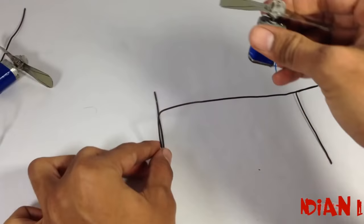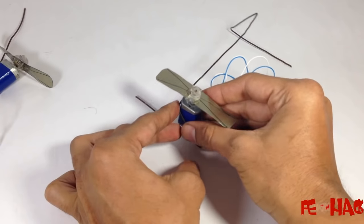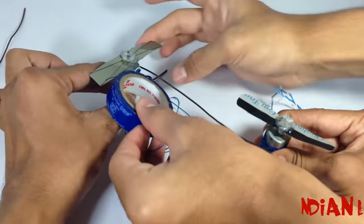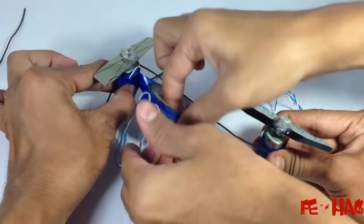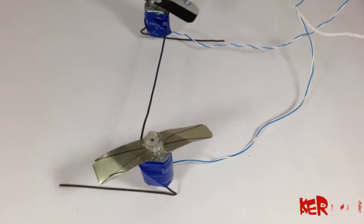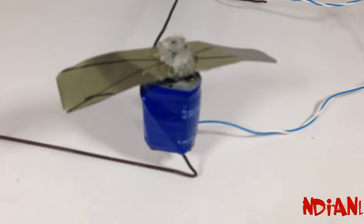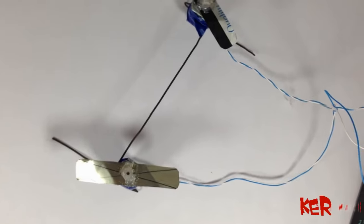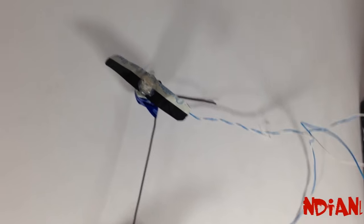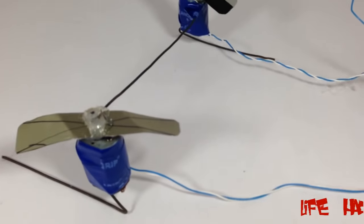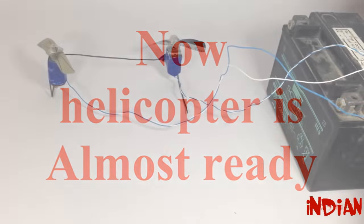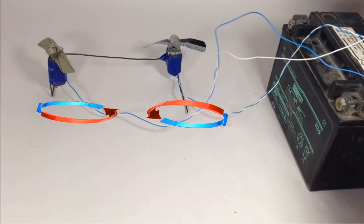Now fix our motor on each end and fix them with tape. Now our helicopter design is almost ready and we just need to give it power. Keep in mind that both rotors are rotating in opposite directions so that they can cancel out the force which they are applying on the frame.